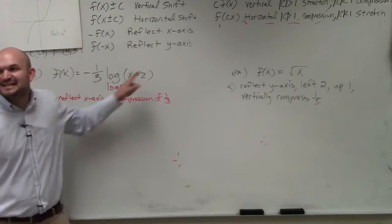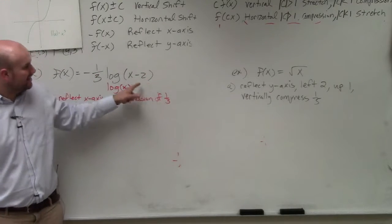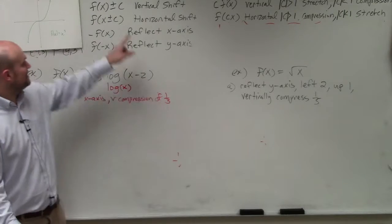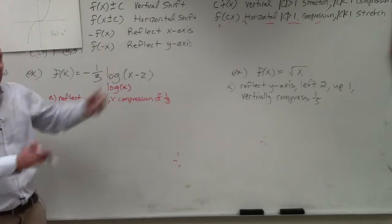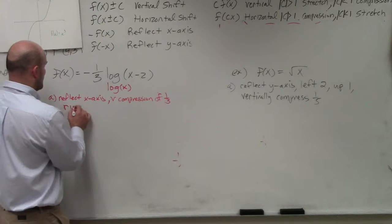Then I now enter inside the parentheses of the function. And notice I'm subtracting 2. So it's inside the function. That means it's a horizontal shift. Since it's minus 2, I'm going to be going right 2.